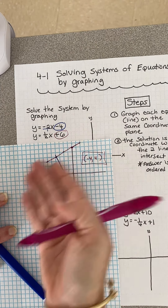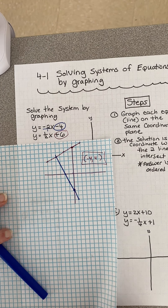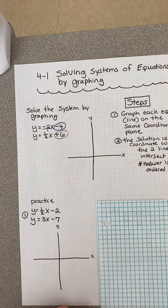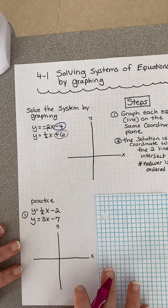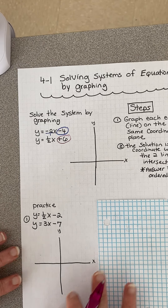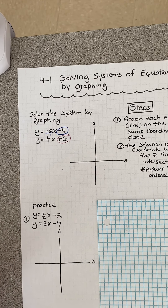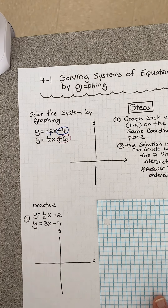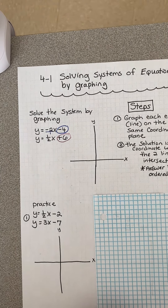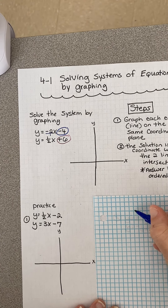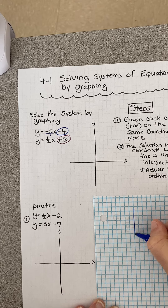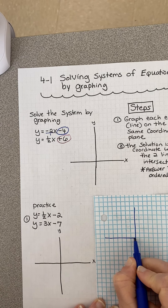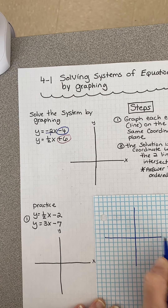That's it - you graph a line, you graph a line, you see where they intersect. This next problem is also in slope-intercept form, so it's pretty straightforward. You might want to freeze the video because it's pretty quick. I'll try to do it quickly so it doesn't run too long.